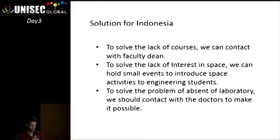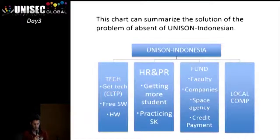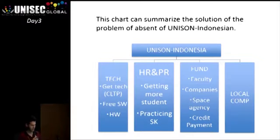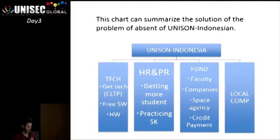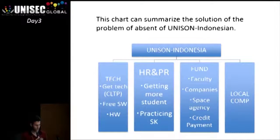This chart can summarize a solution for the problem of absence of a Johnson section in Indonesia. We divided this Johnson section into four forming sections: Technical, HR (Human Resources), Public Relations, Fund, and Local Competition. In the Technical section, we should get the technology required to start — for example, the program CLTP.